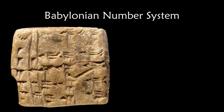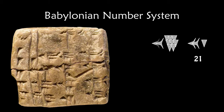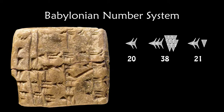The Babylonian number system is the last that we're going to look at. We're going to look at a single number — it might look like three different numbers, but it's actually a single number. Those are three symbols: the symbol for 20, the symbol for 38, and the symbol for 21. The 20 is in what we would think of as the 3,600s position, the 38 is in the 60s position, and the 21 is in the 1s position, because the Babylonians used base 60 instead of base 10.